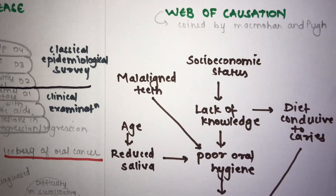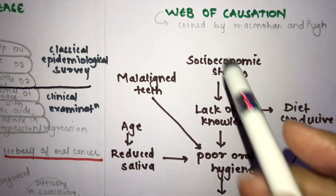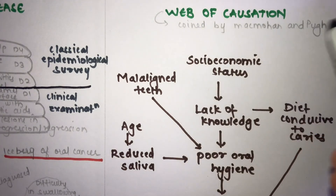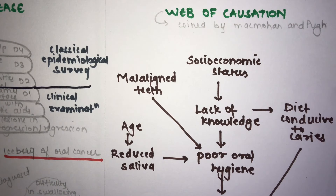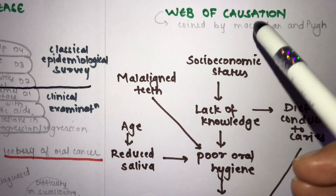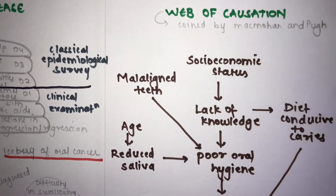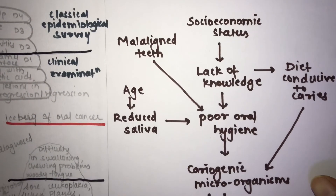The web of causation is a term coined by McMahon and Pugh. It is applicable especially in chronic diseases where the causative agent may be unknown or uncertain, and the disease results from the interaction of multiple factors. Removal of even one important factor may be sufficient to control the disease.